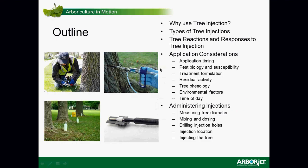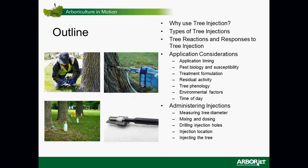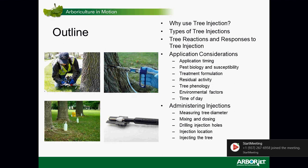Here's what we'll cover today: why use tree injection; the types of tree injection tools; tree reactions and responses to tree injection; and application considerations — things you ought to know when injecting trees, including application timing, pest biology, susceptibility, treatment formulation, residual activity, tree phenology, environmental conditions, time of day, and administering injections — the practical aspects such as measuring the tree, mixing, dosing, and drilling the injection holes.